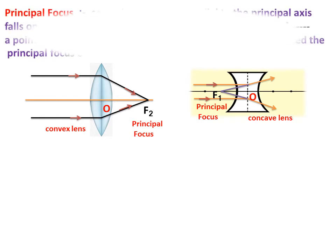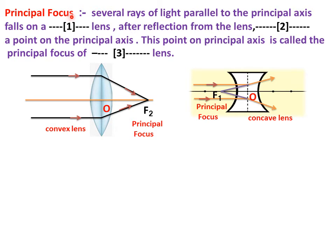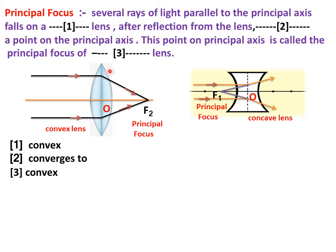This next definition is very interesting — the principal focus. Several rays of light parallel to the principal axis fall on a convex lens. After refraction from the lens, these rays converge to a point on the principal axis. This point is called the principal focus of the convex lens, represented as F2.